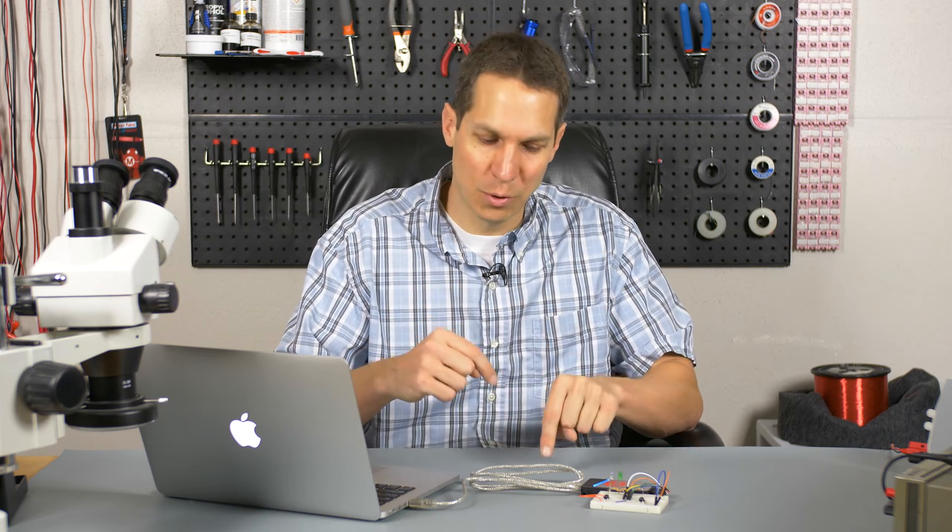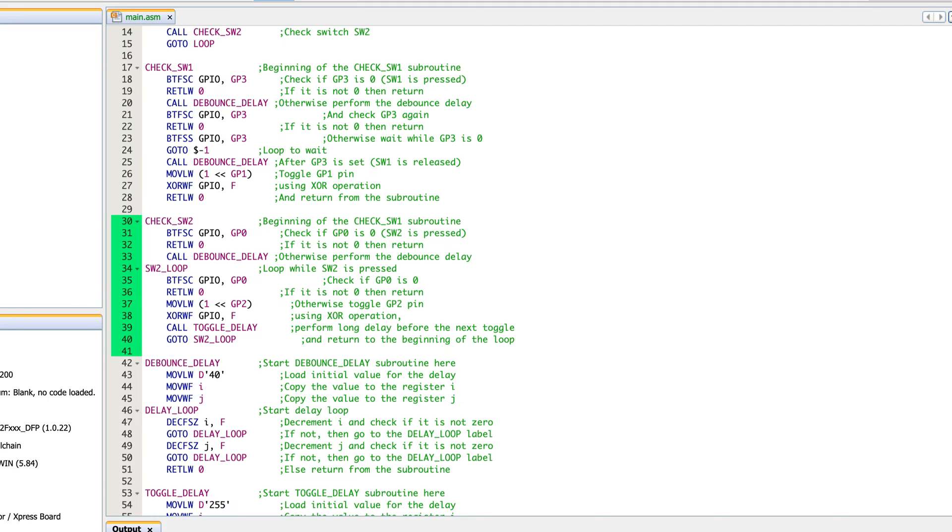Whereas with switch two, as you push it, it then has to toggle while it's holding. So that's going to be a little bit more complicated, but still not too bad. Let's jump back into the code with check switch two. You'll see this is very similar. The first thing it's doing is when it's polling, it's saying, hey, is GPIO, is it zero? Has switch two been pressed? If not, then jump back out, go back to the polling. If so, call that debounce delay.